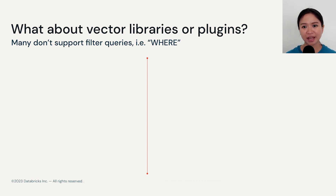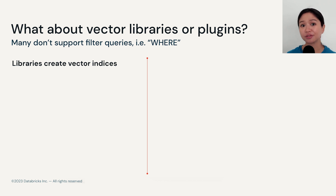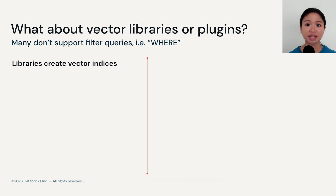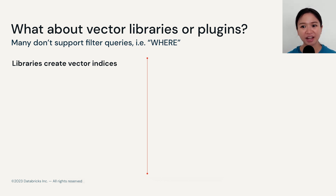But what about vector libraries or plugins? Let's talk about libraries first. Vector libraries do create vector indexes for you. As we mentioned a few segments ago, a vector index is a data structure that helps you to conduct efficient vector search. So if you don't want to integrate with a new database system, it's actually completely fine to use a vector library that creates these vector indexes for you.